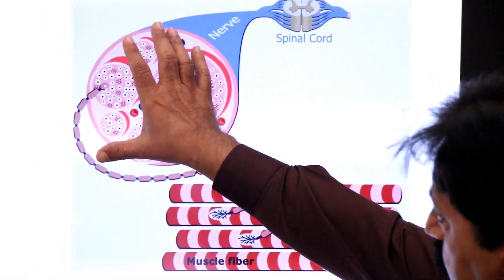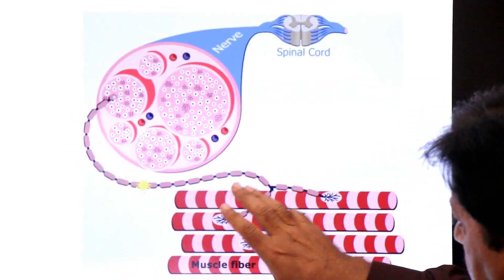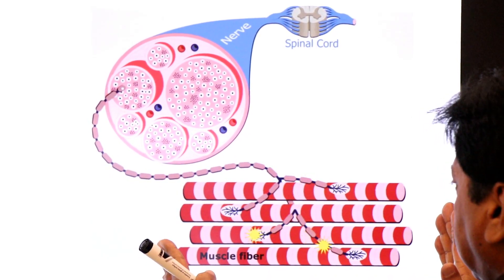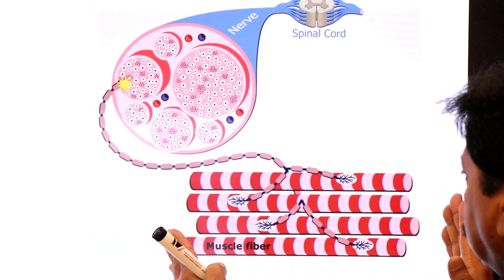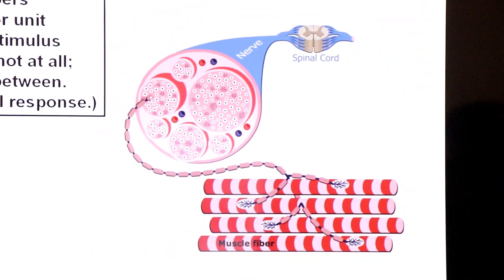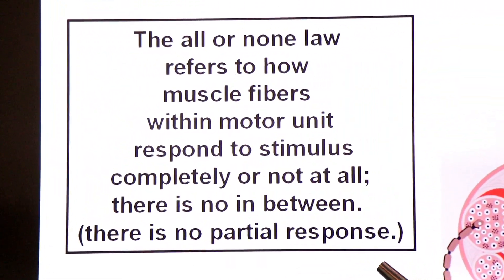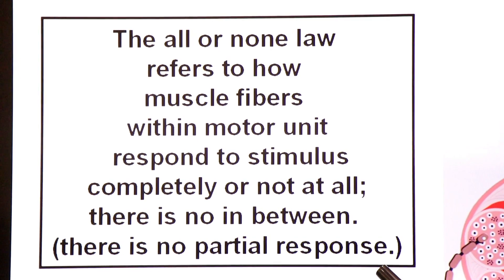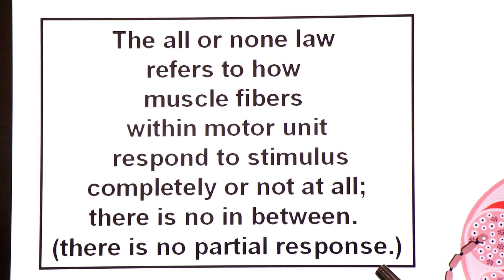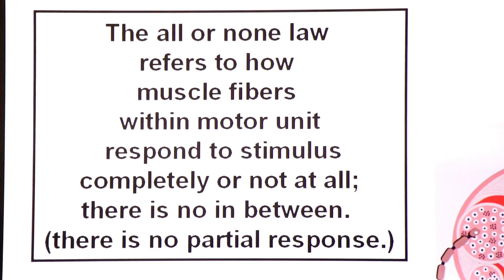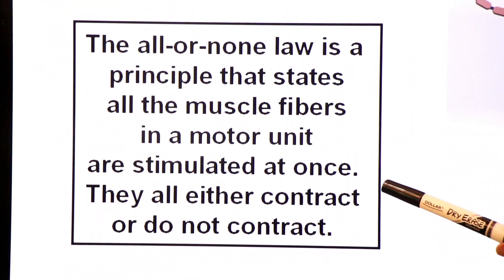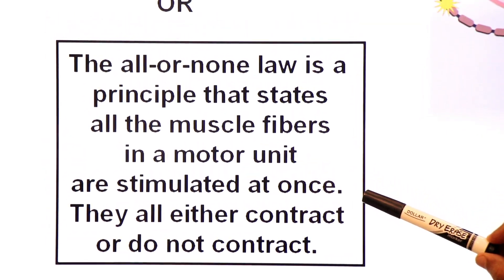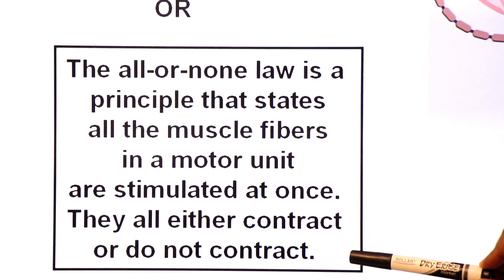This animation shows a motor unit — when the stimulus comes, all the muscle fibers within a motor unit will contract. This is called All response. The All or None Law refers to how muscle fibers within a motor unit respond to a stimulus completely or not at all. There is no in-between, no partial response. It is a principle that states all the muscle fibers in a motor unit are stimulated at once and they all either contract or do not contract.